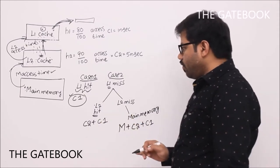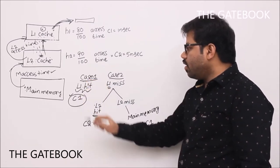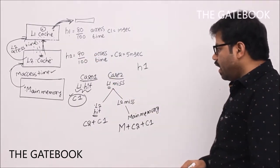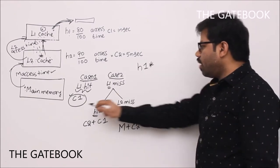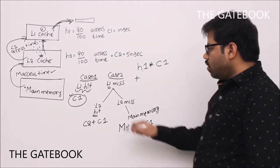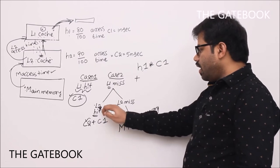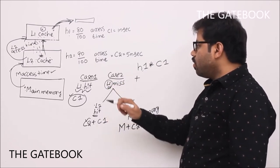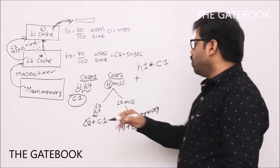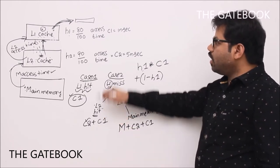Now let's simplify with a formula. What is the L1 hit ratio? The hit ratio of L1 cache is H1. So H1 times we get data from L1 at cost C1: that gives H1 × C1. For L1 miss and L2 hit: L1 miss ratio is 1 minus H1, and on those misses L2 hits with probability H2.